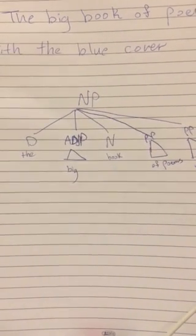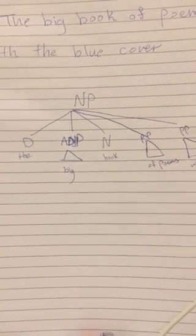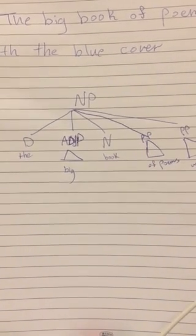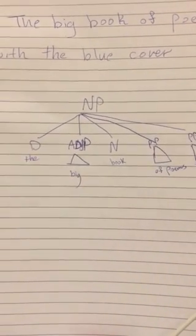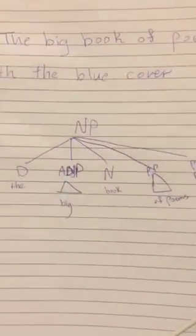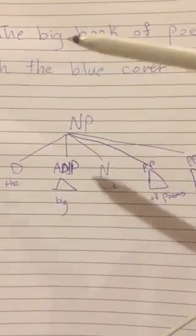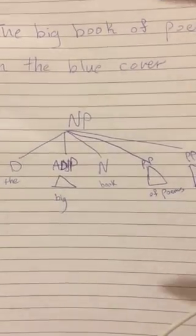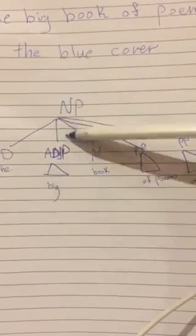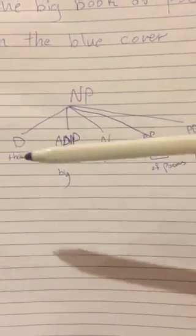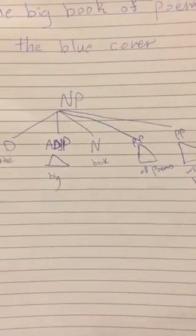Hello everyone. In this video we're going to talk about a small introduction to the X-bar theory and why the flat structure doesn't work anymore. So here we have an example: 'the big book of poems with the blue cover.' We can see that it's a perfectly grammatical sentence. We have the noun phrase and all the daughters — this is what we call a flat structure.